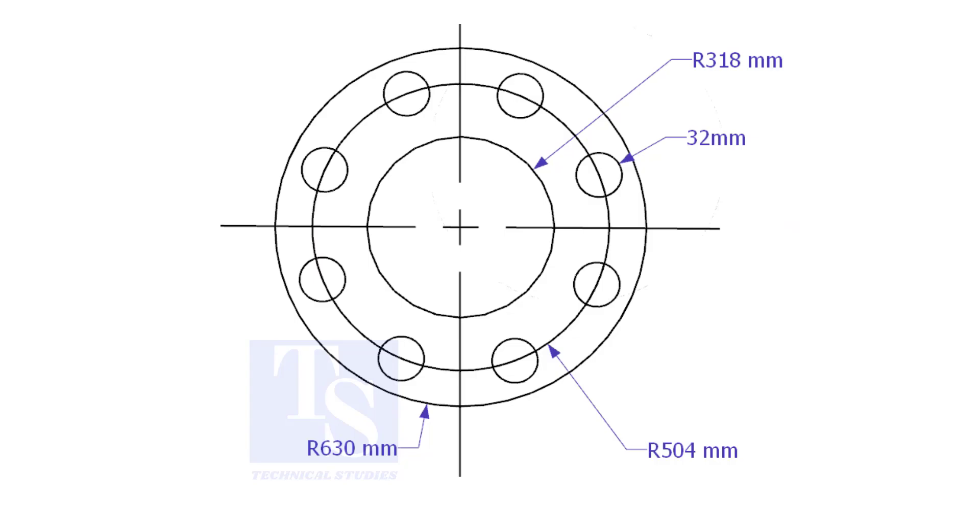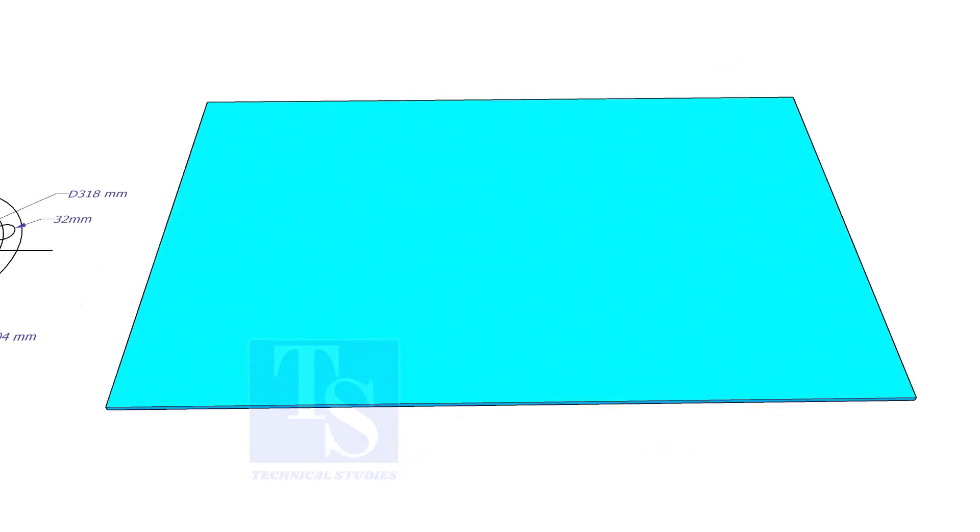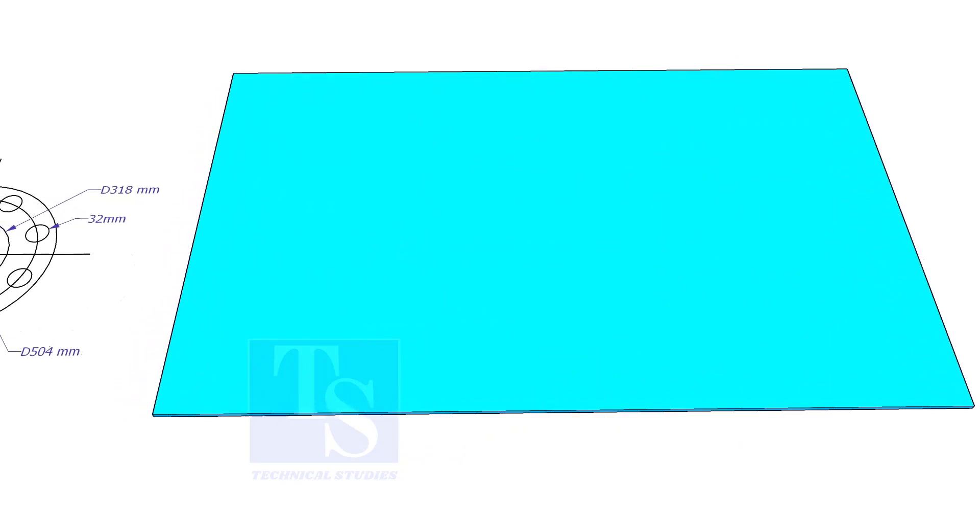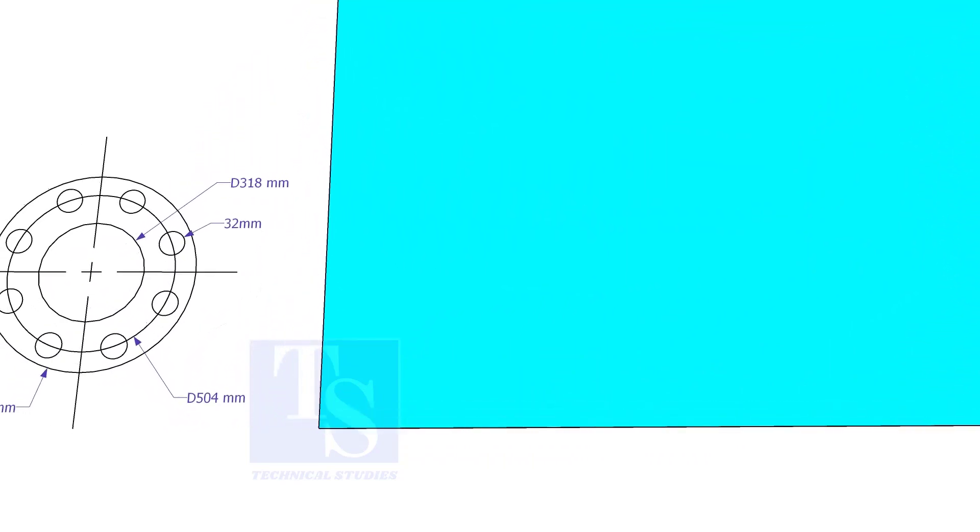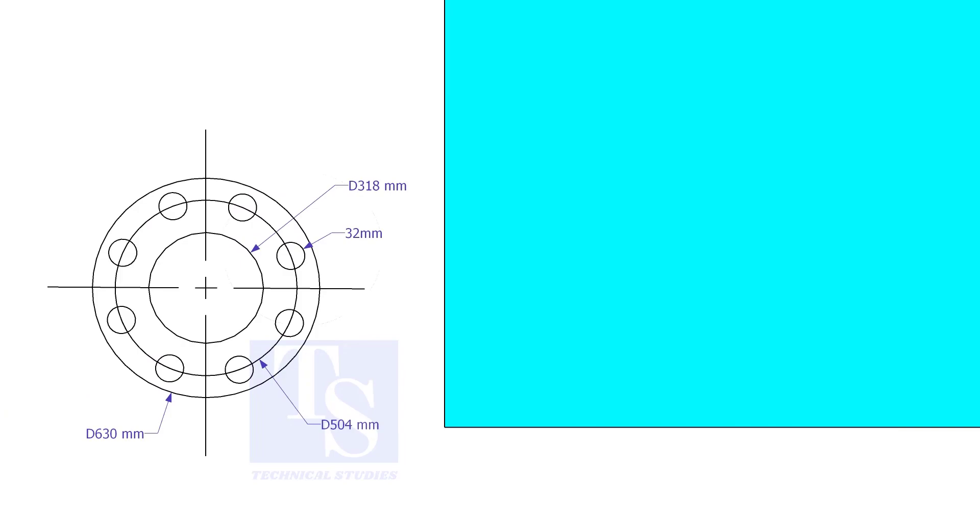Let us mark this flange. Draw a line 10 millimeters more than the half OD of the flange, from the edge of the plate.